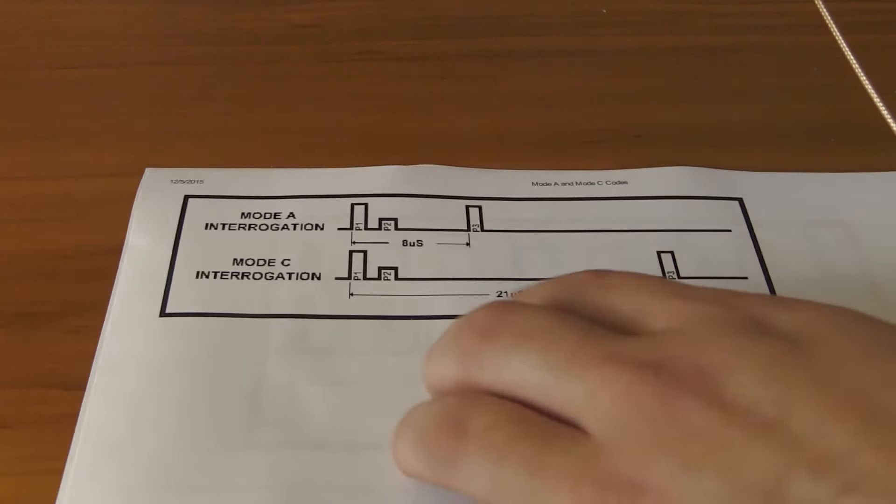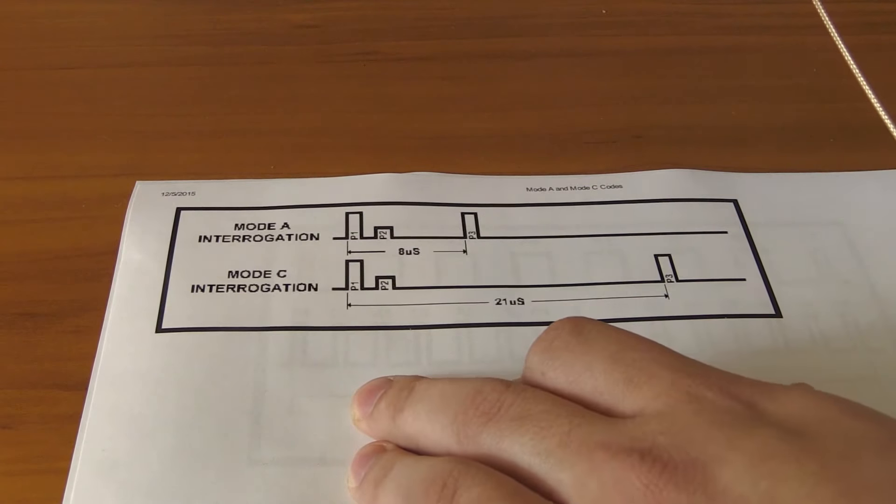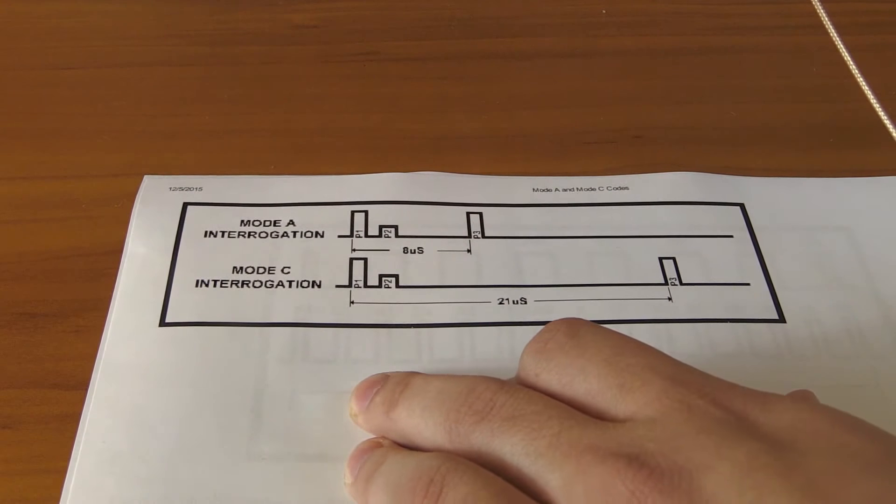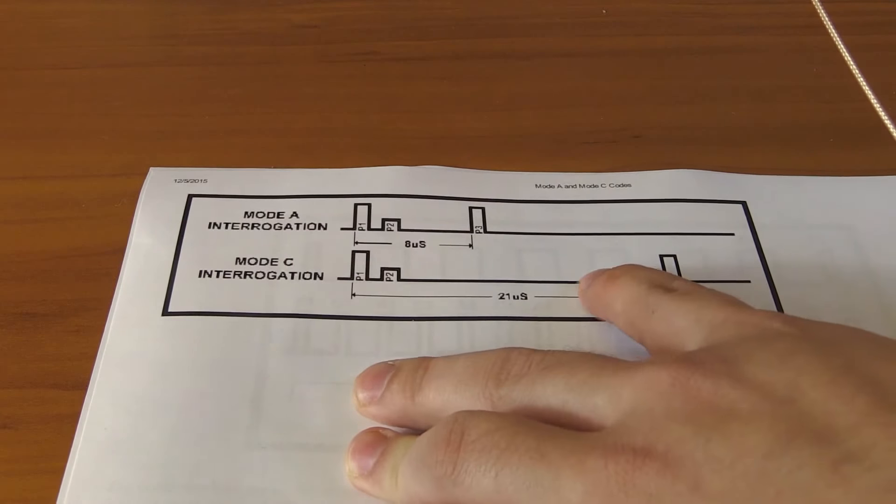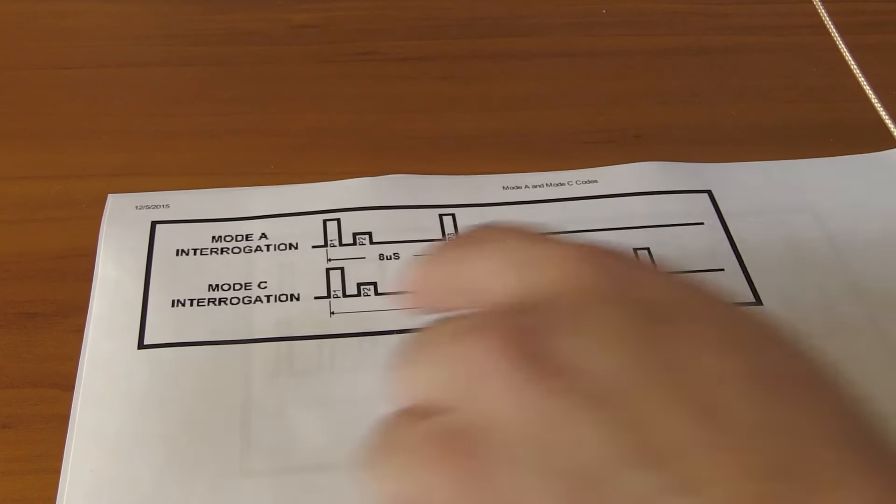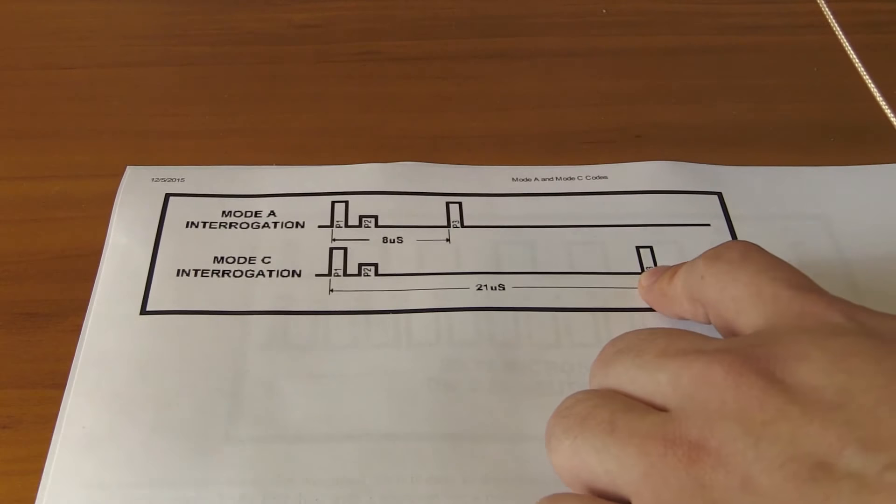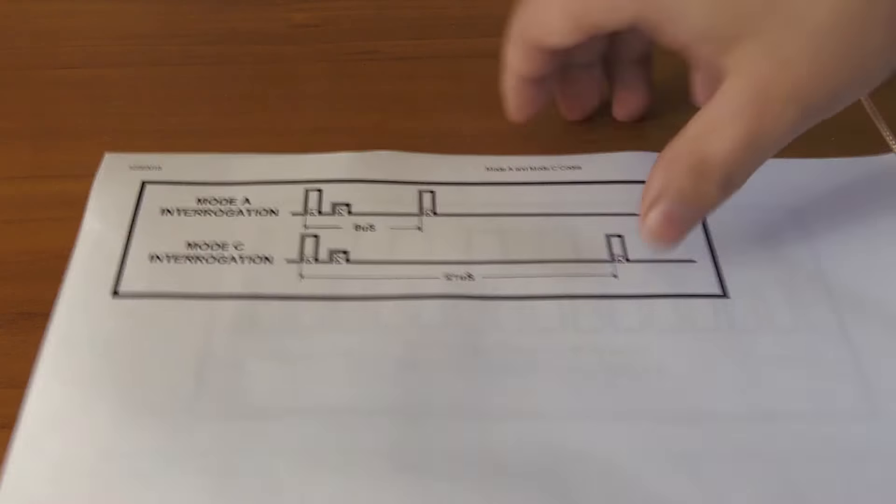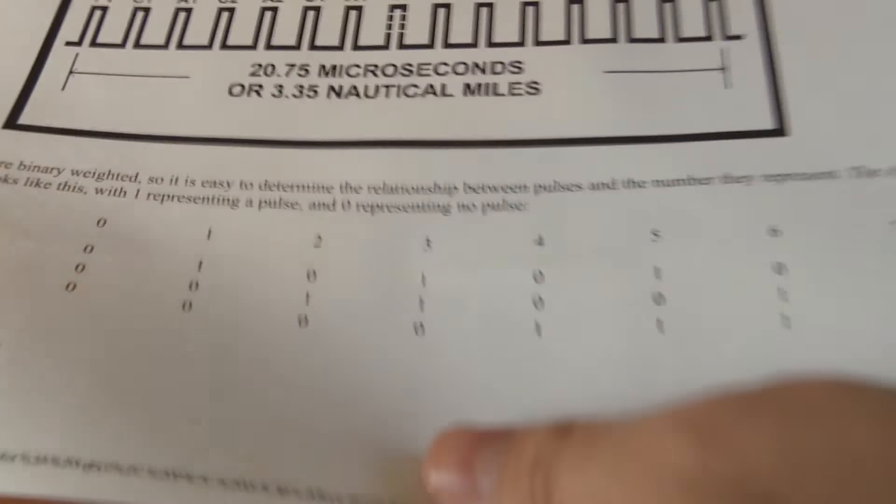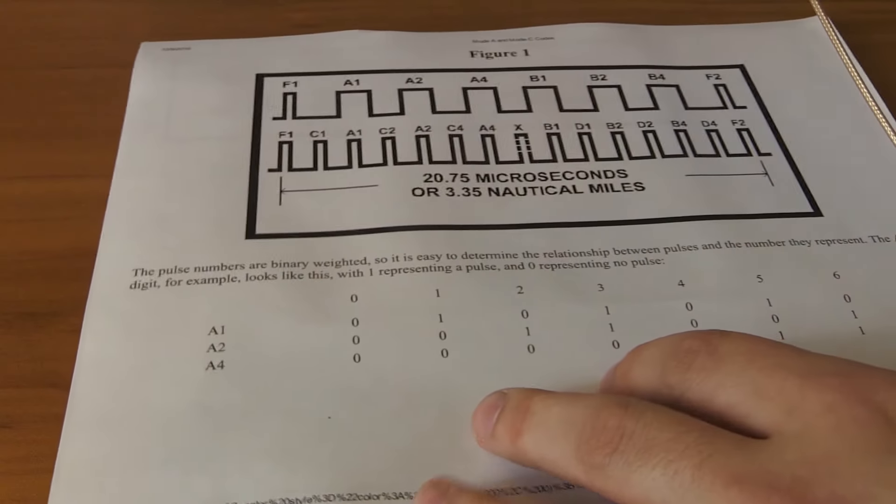All right. So now, this is something that you can quite easily generate. If you have a signal generator that goes up all the way to a little over one gigahertz, generating this pulse shape, especially since you only need P1, P3, it's fairly easy. So we're not really going to get into that one. But what's more interesting is how the aircraft responds.